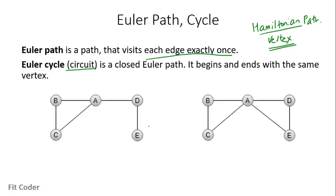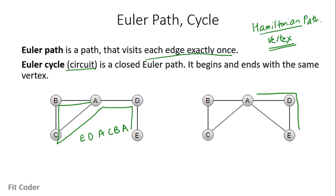Let's see an example. In the left side graph, if we start the traversal from E we can go from E to D, then to A, then to C, then to B, and then to A. So I have visited all the edges of the graph exactly once — this is an Euler path. But in the right side graph, we start from E, go to D, then A, then B, then C, then A, then again E. Since the starting and end vertex is the same, this is an Euler cycle.